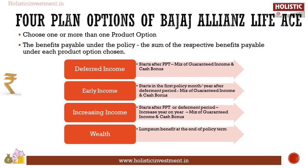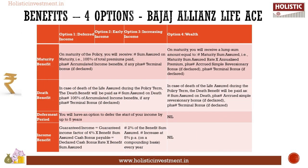Option One — Deferred Income: provides income in arrears starting after the premium payment term and deferment period; income is a mix of guaranteed income and cash bonus if declared. Option Two — Early Income: provides income in arrears from the first policy month or year after the deferment period, by way of cash bonus if declared and guaranteed income. Option Three — Increasing Income: provides an increasing income in arrears starting after the premium payment term and deferment period; income may be a mix of guaranteed income and cash bonus if declared. Option Four — Wealth: provides a lump sum at the end of the policy term.